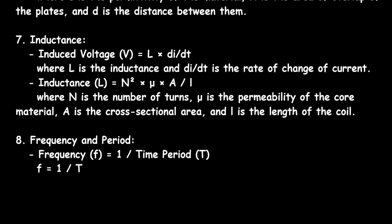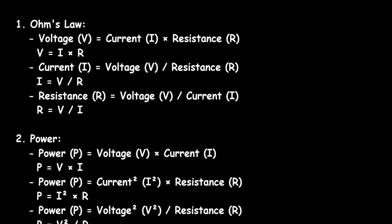Then next is frequency and period. Frequency is represented by small f, and its unit is hertz. It is equal to 1 upon time period T, whose unit is second. So f is equal to 1 upon T, or simply T is equal to 1 upon f. These are some basic electrical engineering formulas.